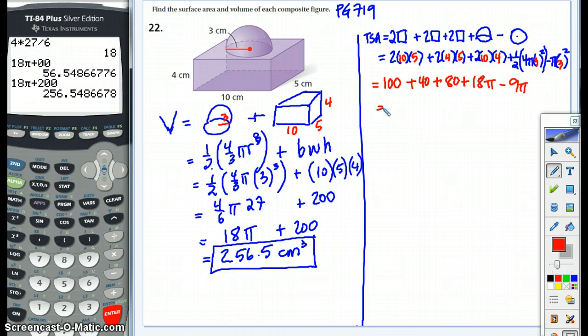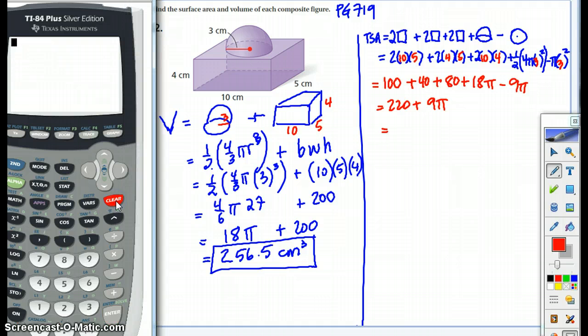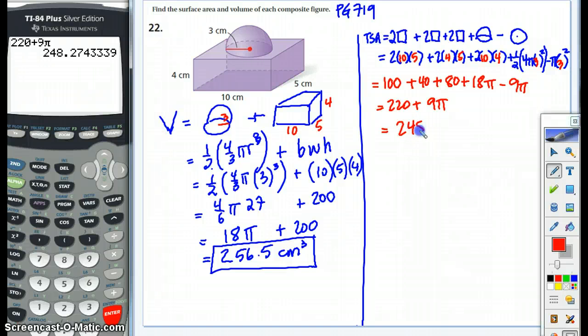Combine like terms. Everything with pi gets combined. Everything without it gets combined. So it looks like we get 220 plus 9 pi. And there's nothing else we can do with that from there. So we're going to go ahead and type that in. 220 plus 9 pi. And the correct answer here then is 248.3. And these are then centimeters squared because it's surface area. So we have found both the volume and the surface area. The hardest part was realizing you needed to subtract off this in order to get rid of it because the hemisphere was covering up part of the prism.